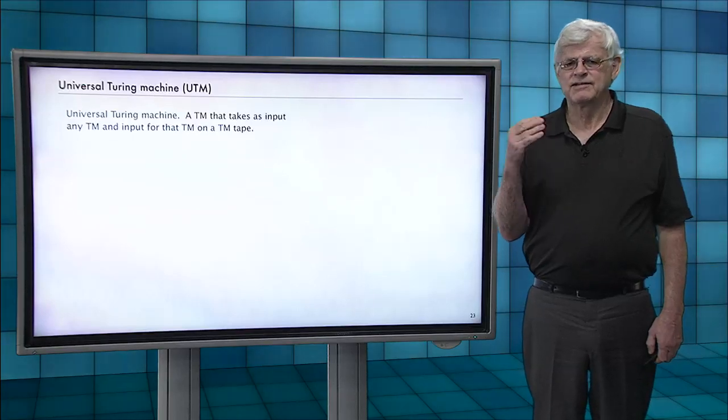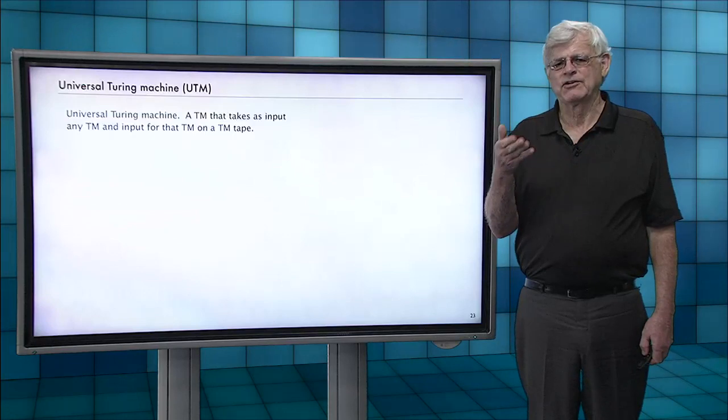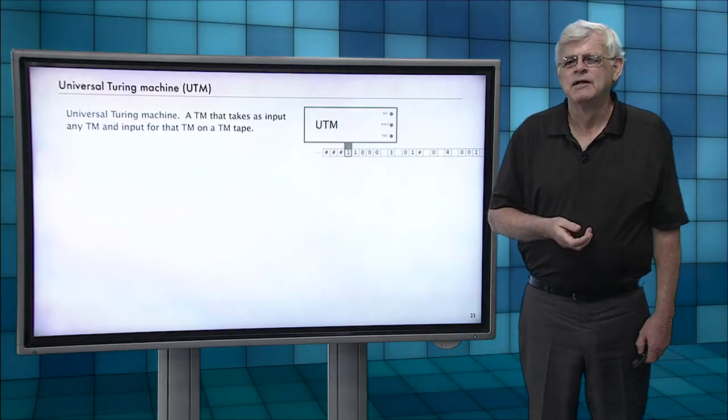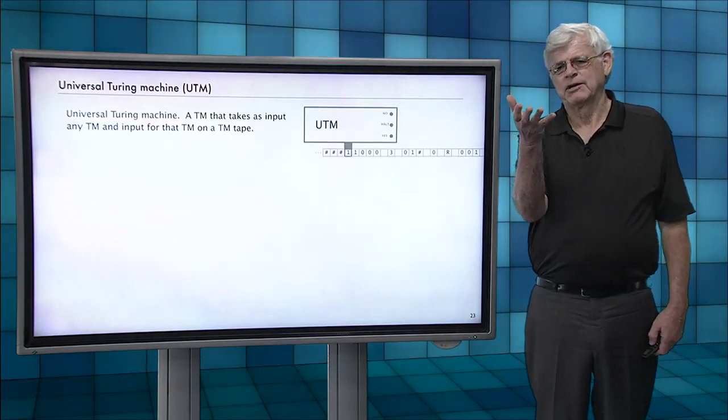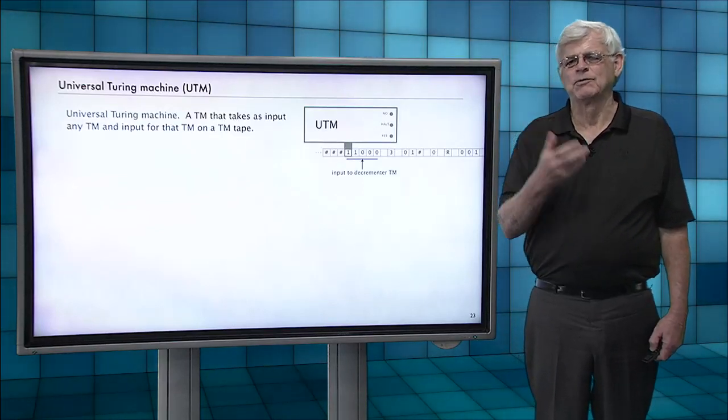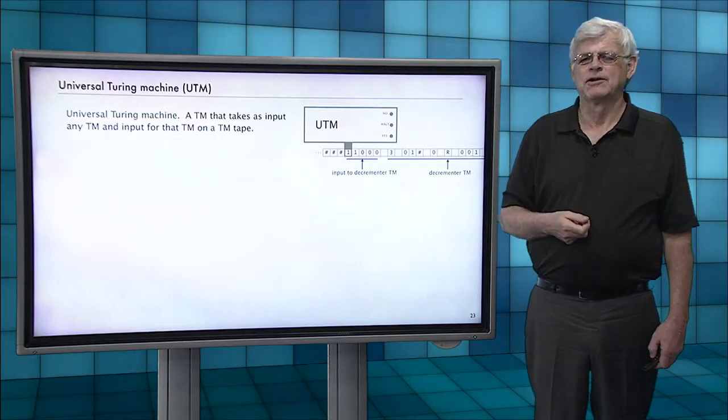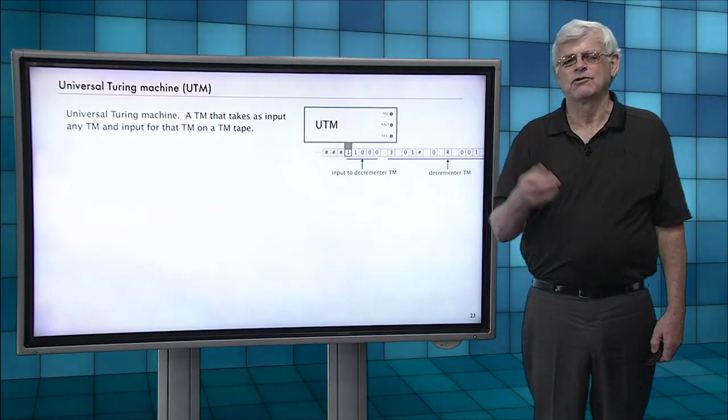A Turing machine that takes as input any other Turing machine and input for that Turing machine on a tape. So that's a particular machine called a universal Turing machine. And that's our example where we had our increment input to our decrement Turing machine and then our decrement Turing machine. You could put any Turing machine there.